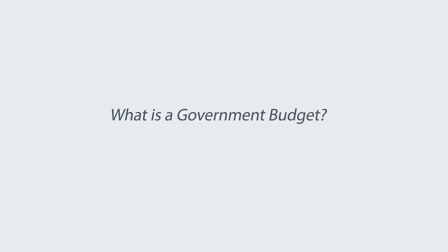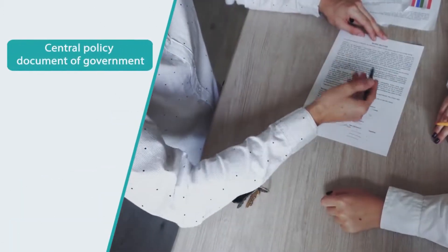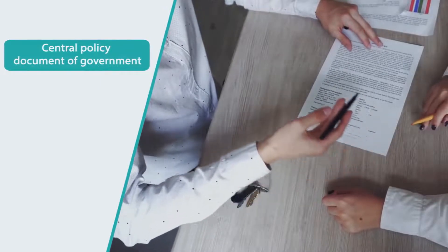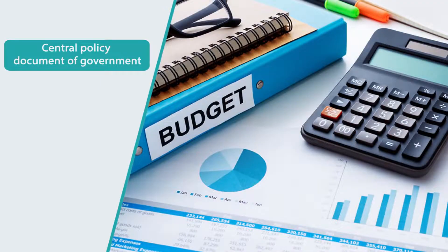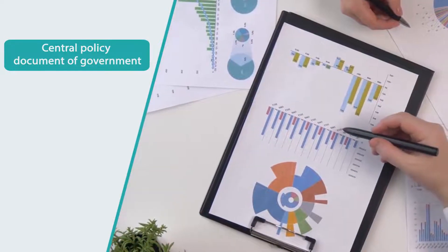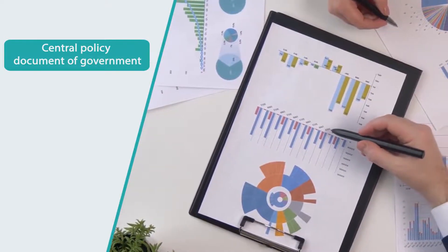What is a Government Budget? The budget is a central policy document of government, showing how annual and sometimes multiannual objectives will be prioritized and achieved through the raising and reallocation of financial resources.